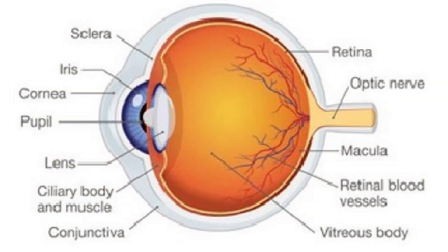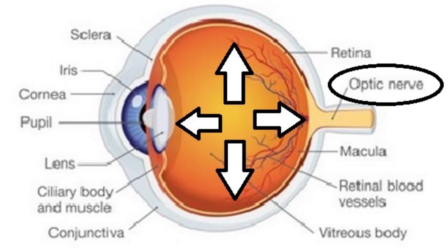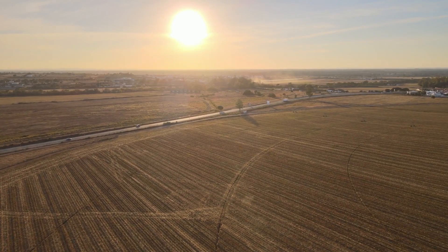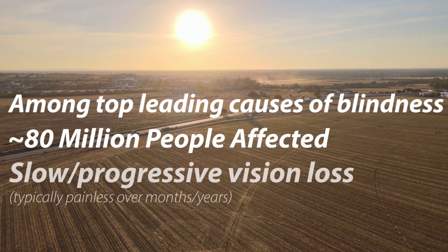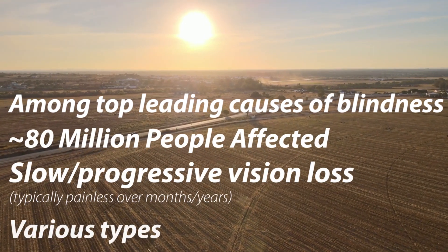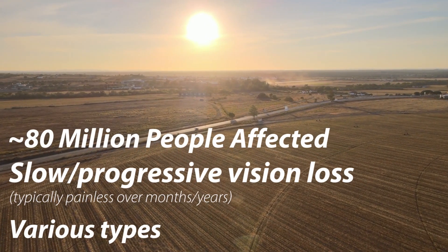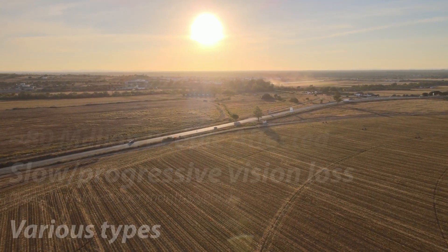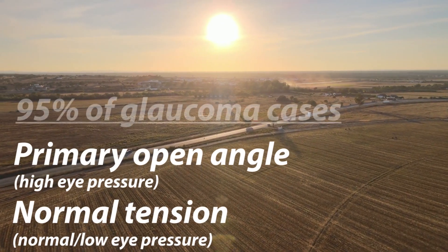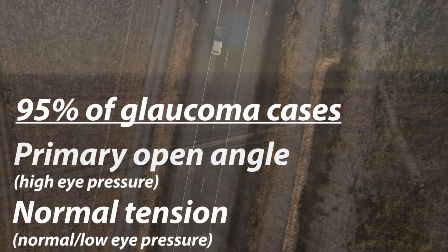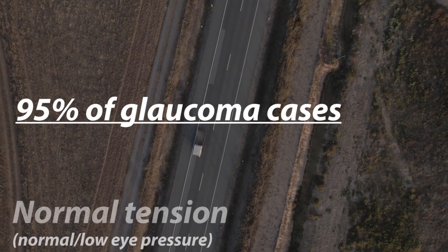In glaucoma, there is irreversible damage to the optic nerve, typically after periods of high eye pressure inside the eye. It's one of the main causes of blindness worldwide, and affects about 80 million people. There are various types of glaucoma, but the two most common are primary open-angle glaucoma and normal tension glaucoma, which make up about 95% of all glaucoma cases.